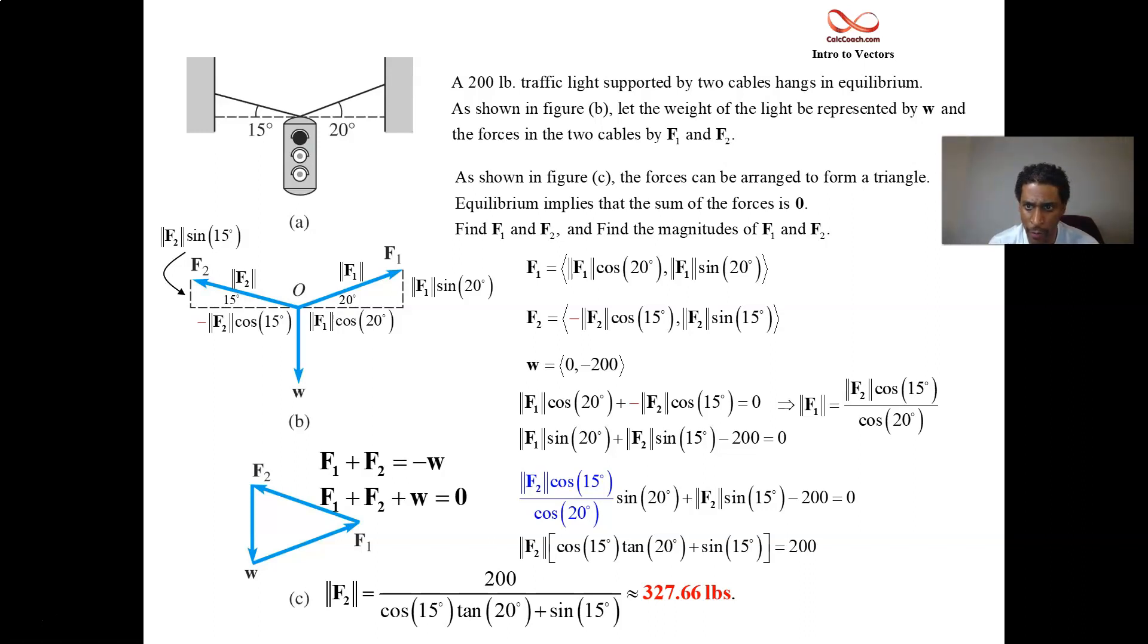With the shorter angle, I think we should expect the magnitude of F1 to be more. That's my intuition. How do you get the magnitude of F1? Use your substitution. You know mag F2, so plug into the blue. Mag F2, and you'll be able to cosine 15 divided by cosine 20 and get mag F1. And it is slightly larger, 336.